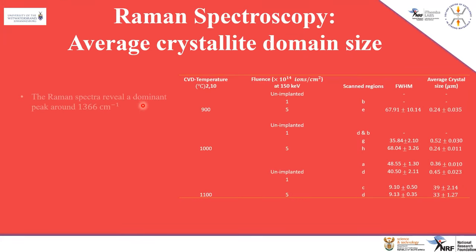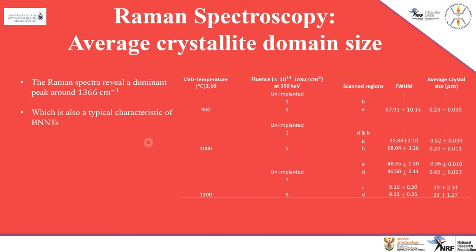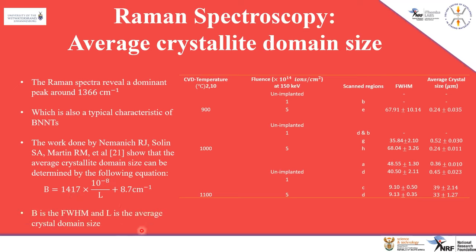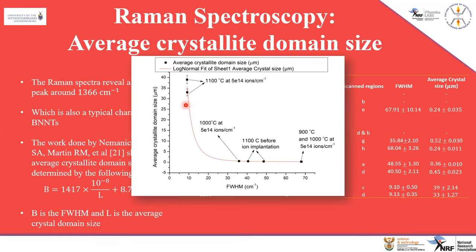Raman spectrum revealed a dominant peak around 1366 cm⁻¹, which is a typical characteristic peak of boron nitride nanotubes. The work of Nemanich showed that average crystallite domain size can be determined using an equation where B is the full width at half maximum (FWHM) and L is the average crystallite domain size. When FWHM increases, average crystallite domain size decreases. If FWHM decreases, the average crystallite domain size becomes larger, meaning the phonon lifetime is much longer — which is confirmed by the 1100°C samples showing a crystallized peak.